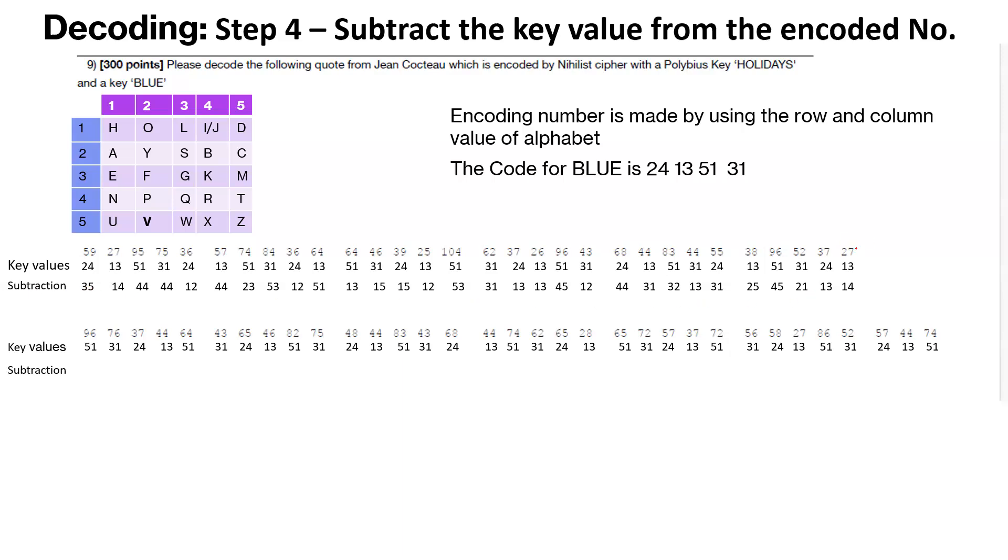So in this case, I'm just going ahead and populating the subtraction row out here. I did it for the first row here. And then I'll go ahead and do it for the second row here. So 96 minus 51 would be 45, 76 minus 31 would be 45 again. So two 45s out here. And so we populate everything here.